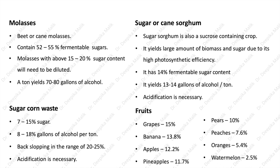Sugar or cane sorghum can also be used for ethanol production. It is a sucrose-containing crop that yields a large amount of biomass and sugar due to its high photosynthetic efficiency. It has 14% fermentable sugar content and yields 13 to 14 gallons of alcohol per ton. Several fruits are also a good source of sucrose: grapes 15%, banana 13.8%, apples 12.2%, pineapples 11.7%, pears 10%, peaches 7.6%, oranges 5.4%, and watermelon 2.5%.